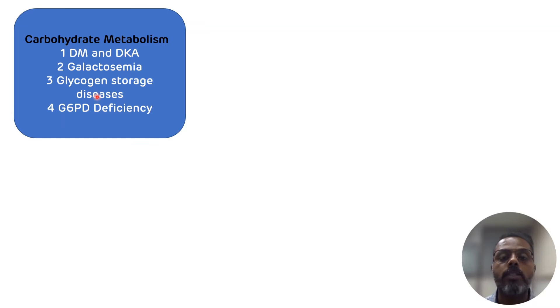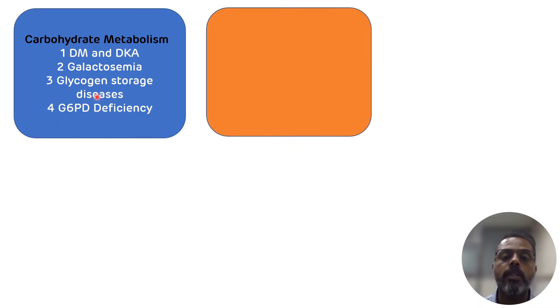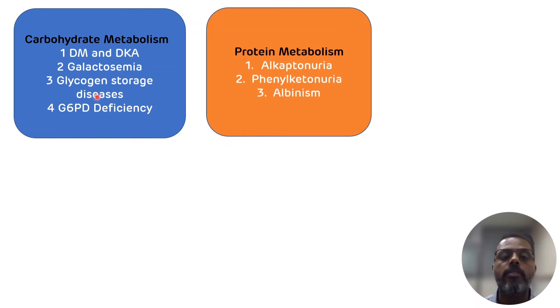Now we will see topics of protein metabolism. In the protein metabolism, frequently asked case studies are alkaptonuria, phenylketonuria, and albinism.